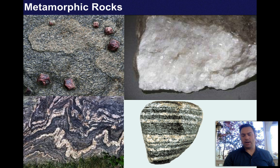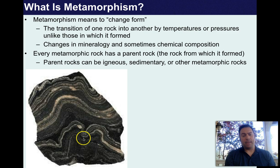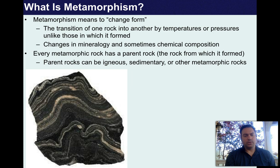So what is metamorphism? Metamorphism means to change form. It's simply the transition of one rock into another by temperatures or pressures unlike that which it formed — changes in mineralogy and sometimes chemical composition. You get not only the rock type changing, but the minerals and chemical composition, but also a whole different texture. This banded gneiss — the parent rock that metamorphosed to form it was actually a shale. Really cool because you would never look at this and say this used to be a shale.